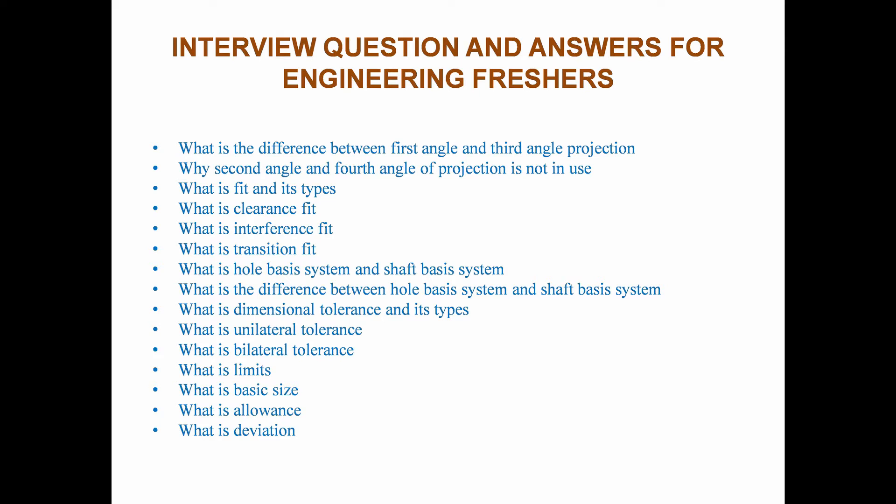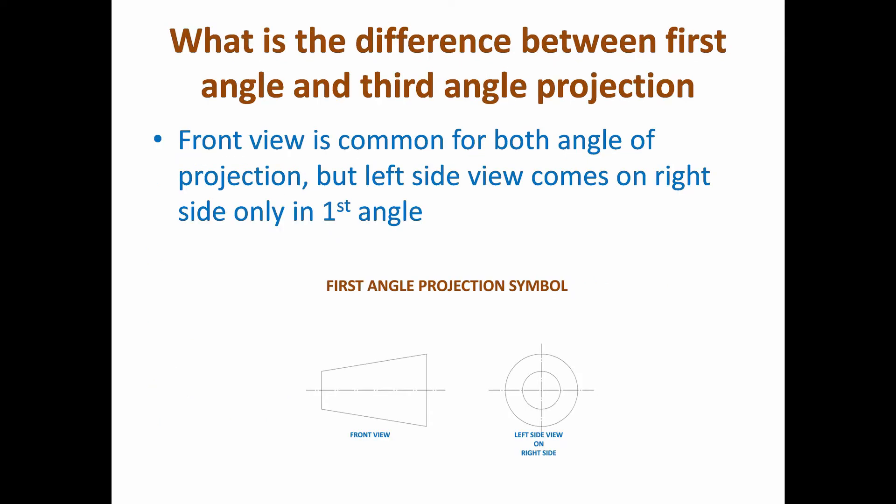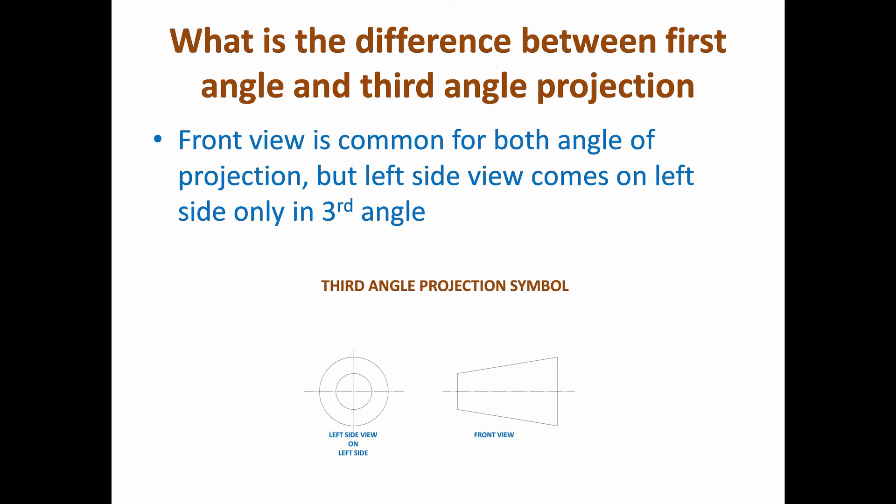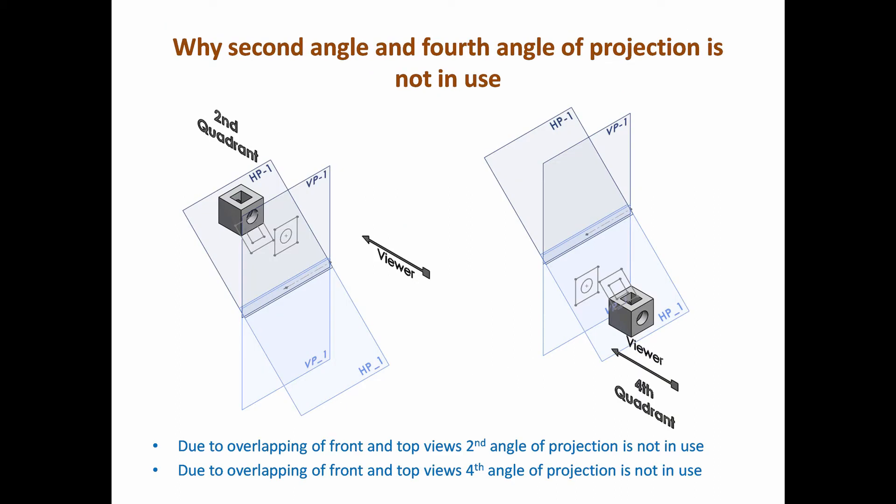What is the difference between first angle and third angle projection? The front view is common for both angles of projection. In first angle projection, the left side view comes on the right side. In third angle projection, the left side view comes on the left side.